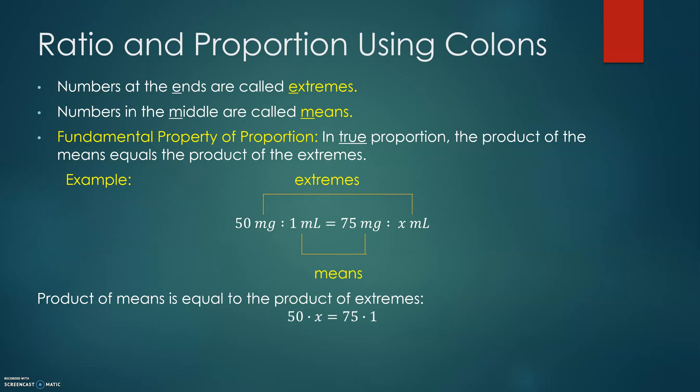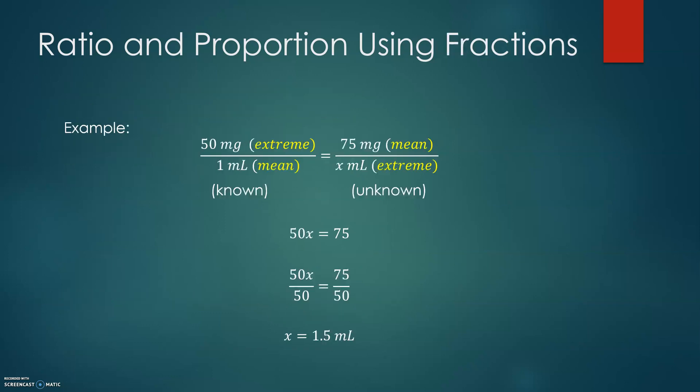Ratio and proportion using colons. If you take a look at our example in the middle on the screen, we have the proportion 50 milligram : 1 milliliter equals 75 milligram : x milliliter. The numbers 50 milligram and x milliliters we call extremes, and the numbers in the middle, 1 milliliter and 75 milligrams, are means. We come to the first step of solving proportion using the fundamental property of proportion that the product of means and extremes are equal.